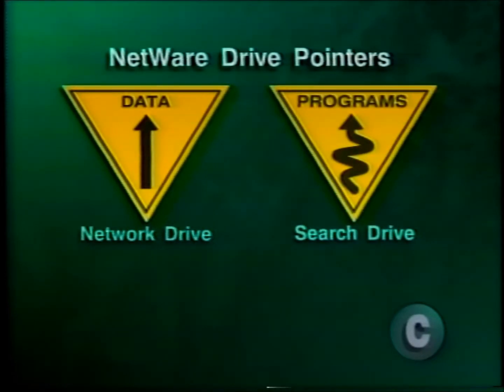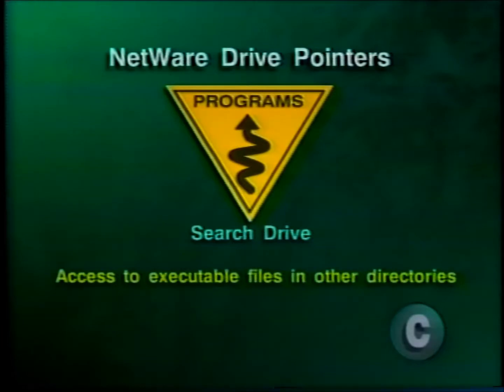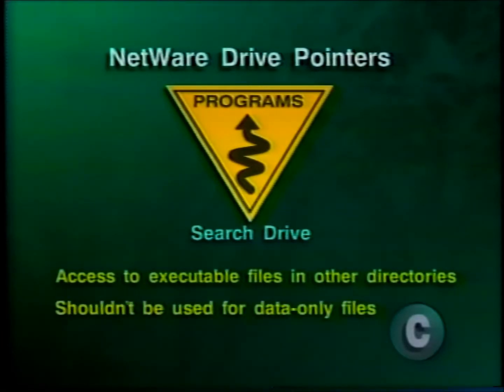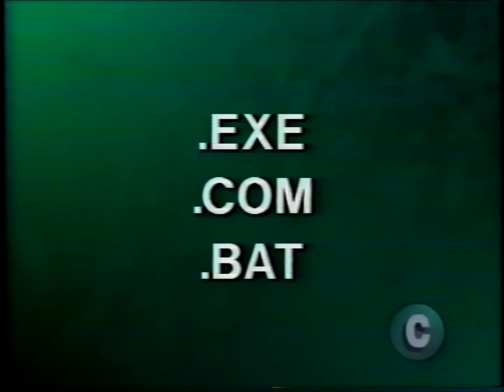Search pointers allow a user located in a data directory to access executable files located in another directory. Search pointers shouldn't be used for data-only files, but for executable files — that is, files which determine the operation of an application or command. You'll always find a .exe, .com, or .bat extension on an executable file. For example, executable files are found in application directories and NetWare directories like Public, which contains command line utilities.